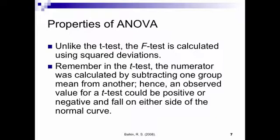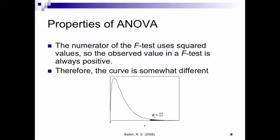So there's some differences in the way an ANOVA is calculated and the way a t-test is calculated. But there's also some similarities. So one difference is that when we do an F-test, we're going to use squared deviations. Everything is going to be squared. Remember in the t-test, the numerator was calculated by subtracting one group mean from another. So in the numerator, you had mean one minus mean two. Because one mean could be higher than the other mean, you could have a positive t-test or a negative t-test. In an F-test, it's always going to be positive. You're never going to have a negative F-value. So your curve doesn't look like a normal curve. It looks a little different. And you can see where the alpha level at 0.05 is at. This is kind of the picture of what an F-curve looks like.